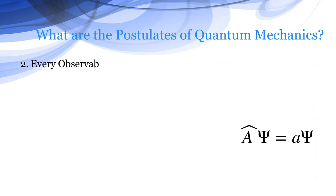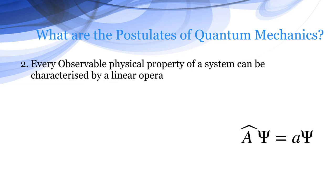Second Postulate is: Every observable physical property of a system can be characterized by a linear operator. For example, position A is characterized by operator A overhead.